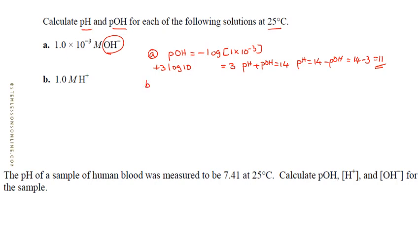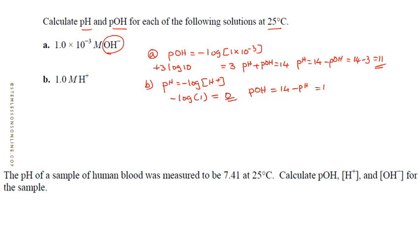For a 1 molar hydrogen ion concentration: pH = −log(1) = 0, since log 1 = 0. Then pOH = 14 − pH = 14 − 0 = 14.